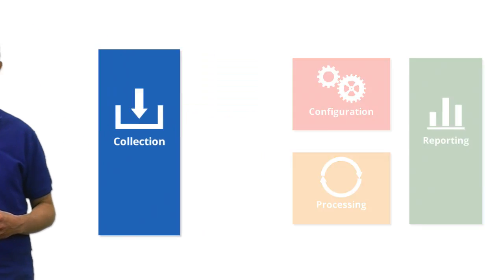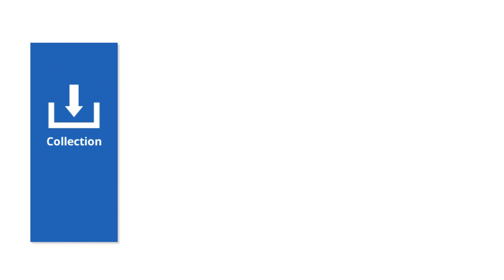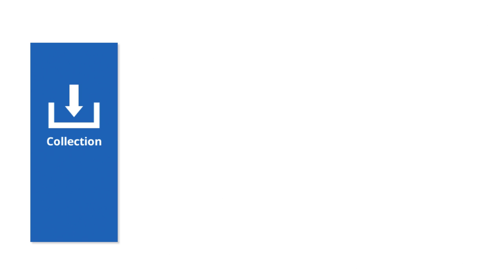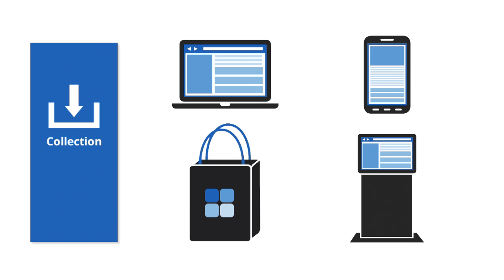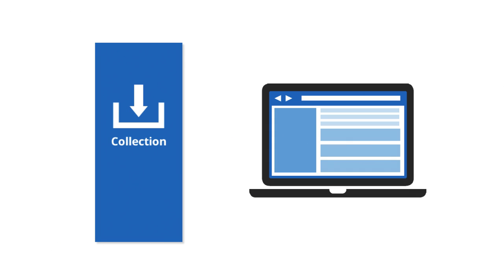Let's start with collection. You can use Google Analytics to collect user interaction data from websites, mobile applications, and really any digitally connected environment that you want to track, like a kiosk or a point of sale system. We'll focus on the basics of website tracking first.